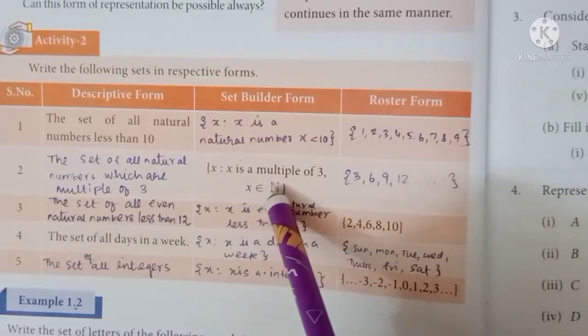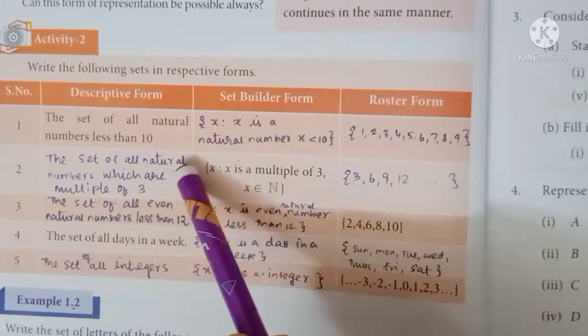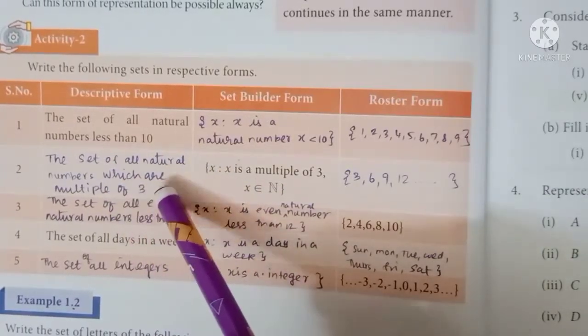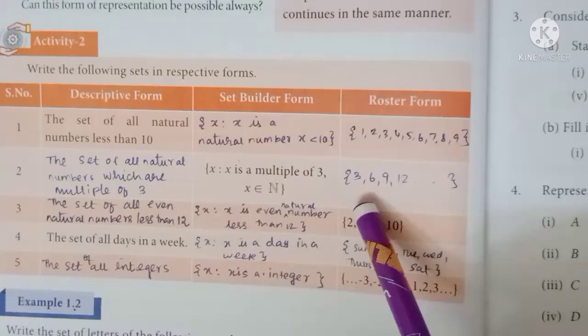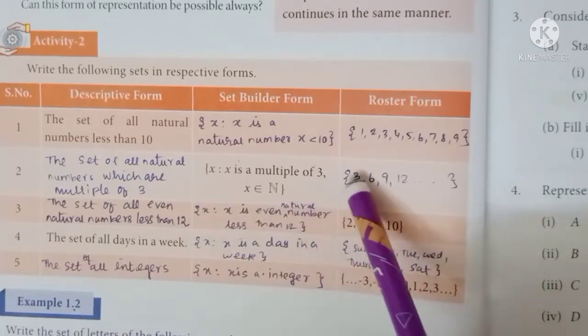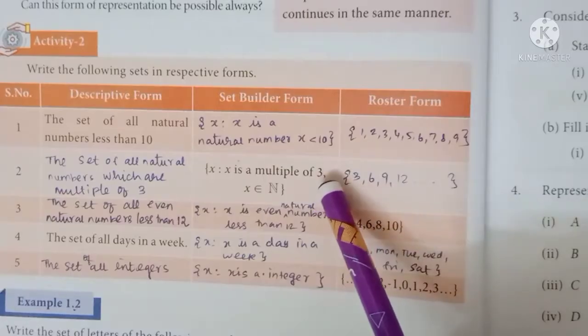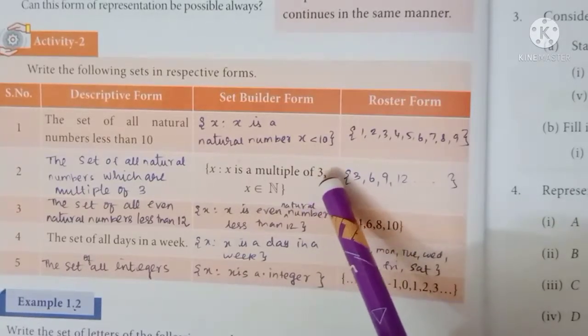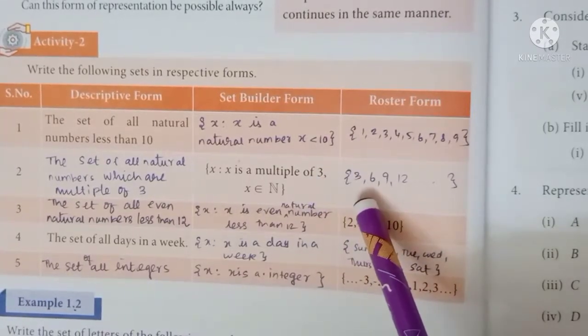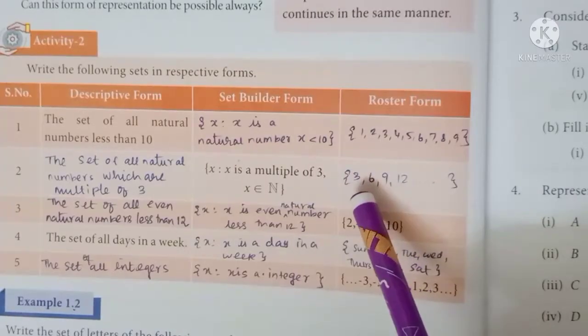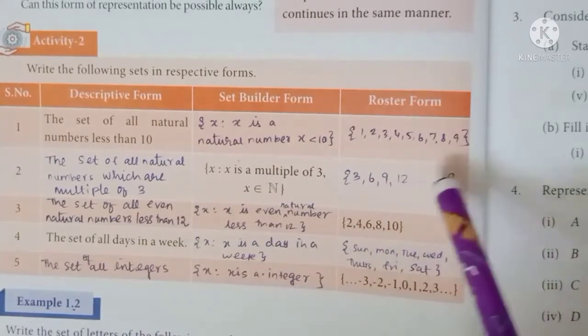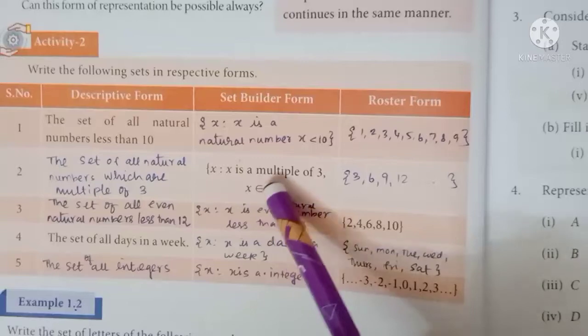We will fill the natural number. The set of all natural numbers which are multiples of 3. So here are the multiples of 3. The natural number starts at 1. Then the multiples of 3 is the third table. So 3 times 1 is 3, 3 times 2 is 6. So 3, 6, 9, 12, etc. This is an infinite set.